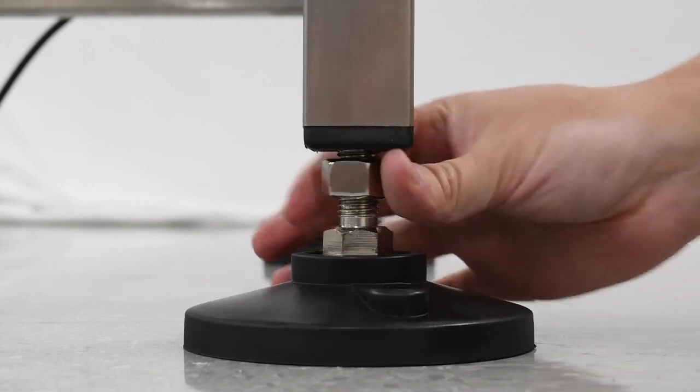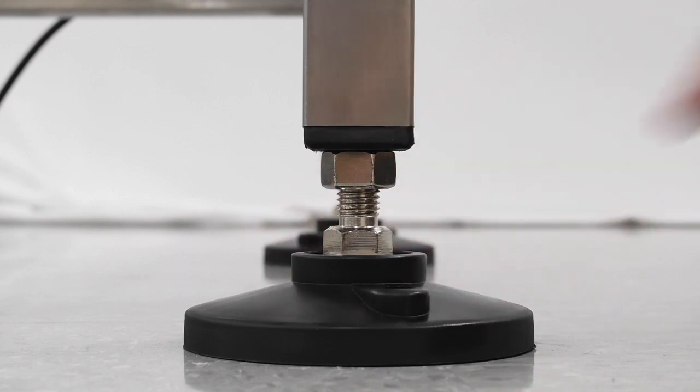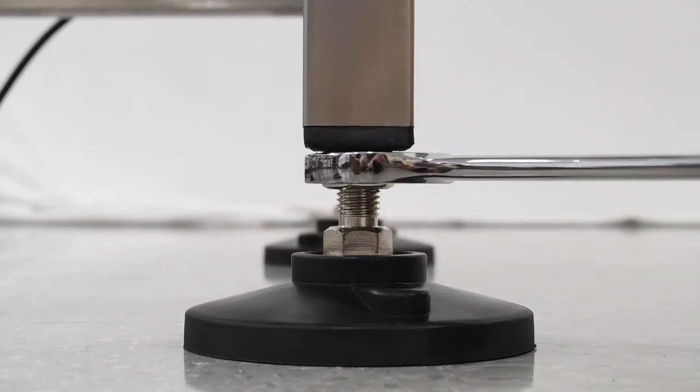Once the accumulation table is level, use a 15/16 wrench to tighten the height adjustment nut until taut.